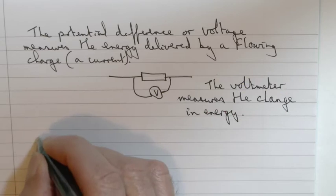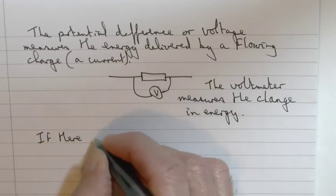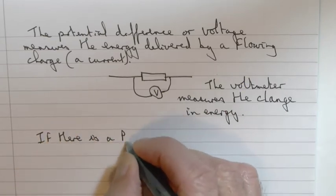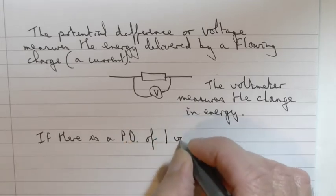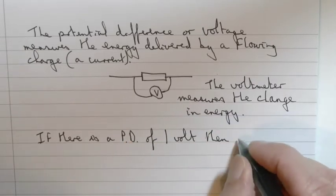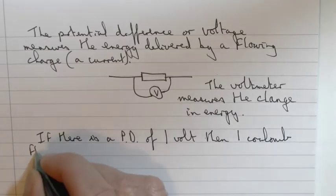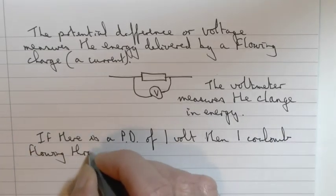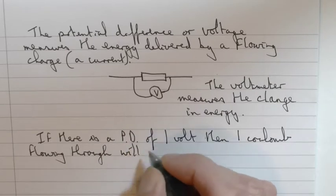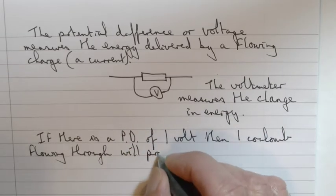First, to remind you that the voltage measured across part of a circuit tells you about the energy delivered by the flowing charge, by the current. If there's a potential difference of one volt, then one coulomb flowing through the component will deliver one joule of energy in one second.